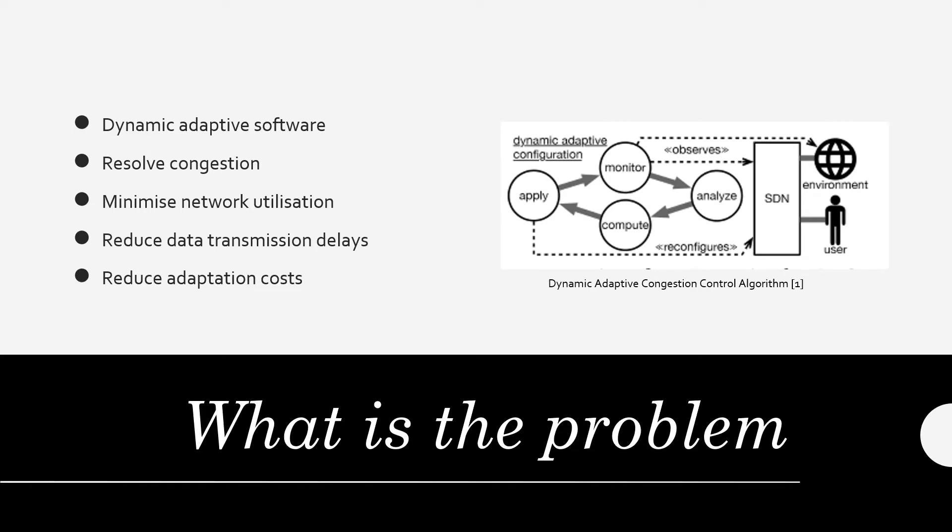This research paper outlines the resolution of real-time congestion within an IoT network due to increase in demand. The proposed dynamic adaptive software-defined network will not only solve congestion, but it will also minimize network link utilization, transmission delays, and adaptation costs.